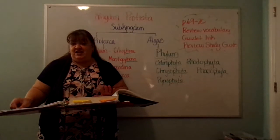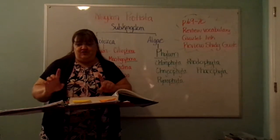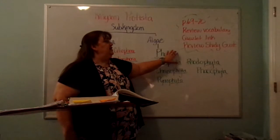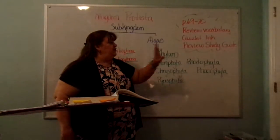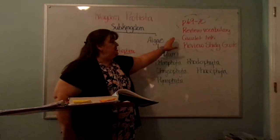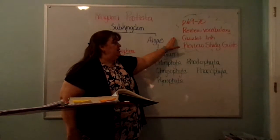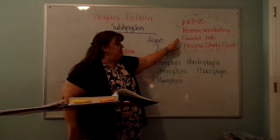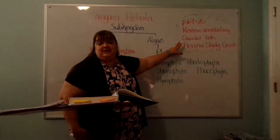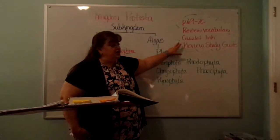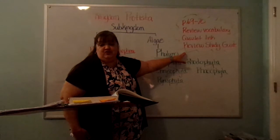Okay, you should have your study guide and your book. I just want you to look up at the board. I have four things that you need to be aware of. Very important: pages 69 and 70. You need to review your vocabulary before you take your test. There's going to be a Quizlet link posted in QuickSchools that will help you review for the material that will be on your test. And you're going to review your study guide.